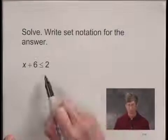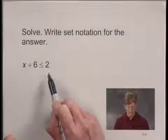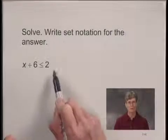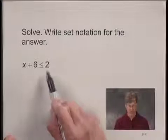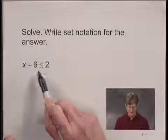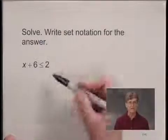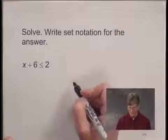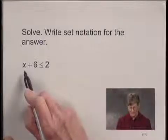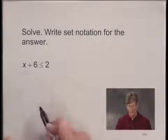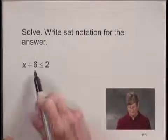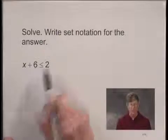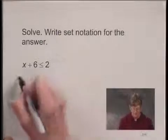The addition principle for inequalities tells me that I can add or subtract the same number on both sides of the inequality and not change the inequality — I will get an equivalent inequality if I do this. I'd like to get the x term alone on the left-hand side, so I'm going to subtract 6 from both sides, because 6 minus 6 is 0.